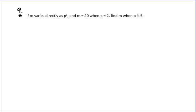If M varies directly as P squared and M equals 20 when P equals 2, find M when P is 5. So what we're going to do on this guy, this is direct variation. Direct variation has the shape Y equals AX. With this one, we don't have X's and Y's. We've got M's and P's, so it's going to look something like M equals AP squared.